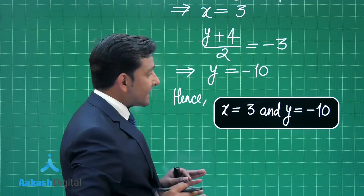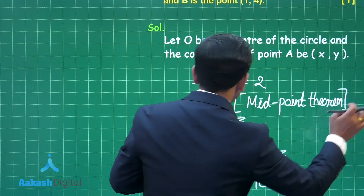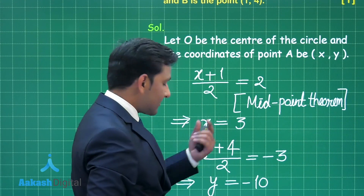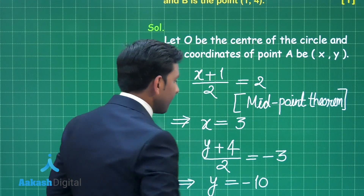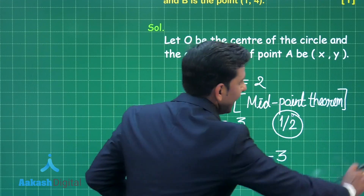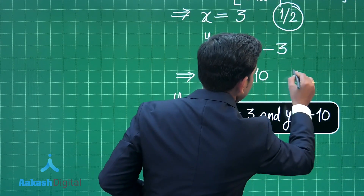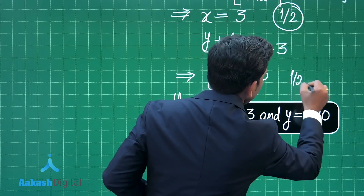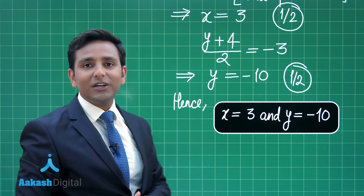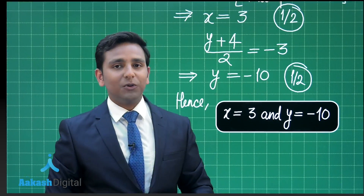Now the marking scheme: obtaining x = 3 earns half a mark, and obtaining y = -10 earns the remaining half mark. I hope you understood this question; let us proceed to the next one.